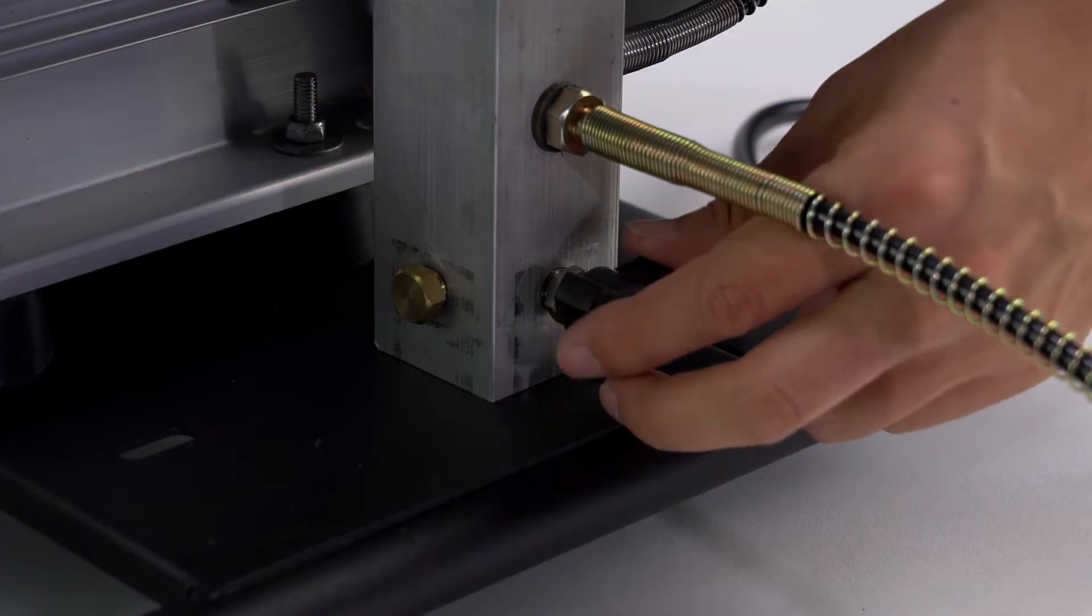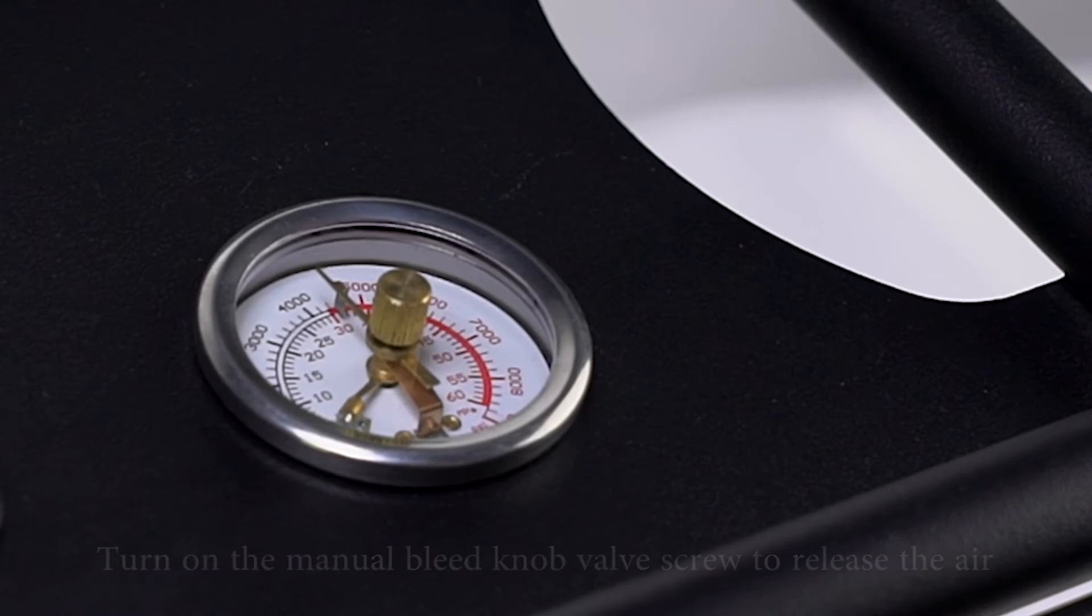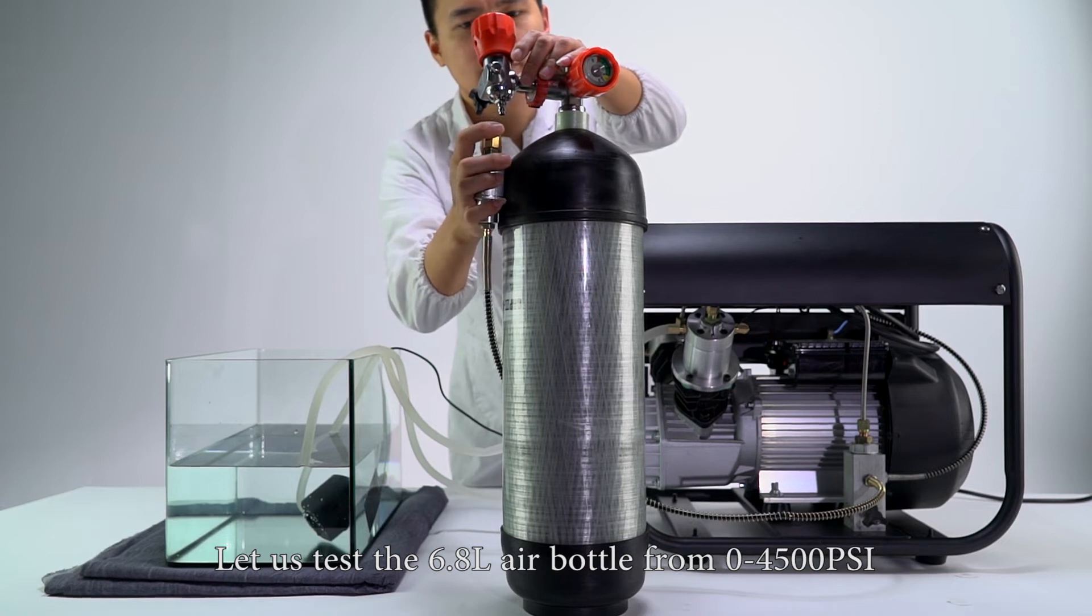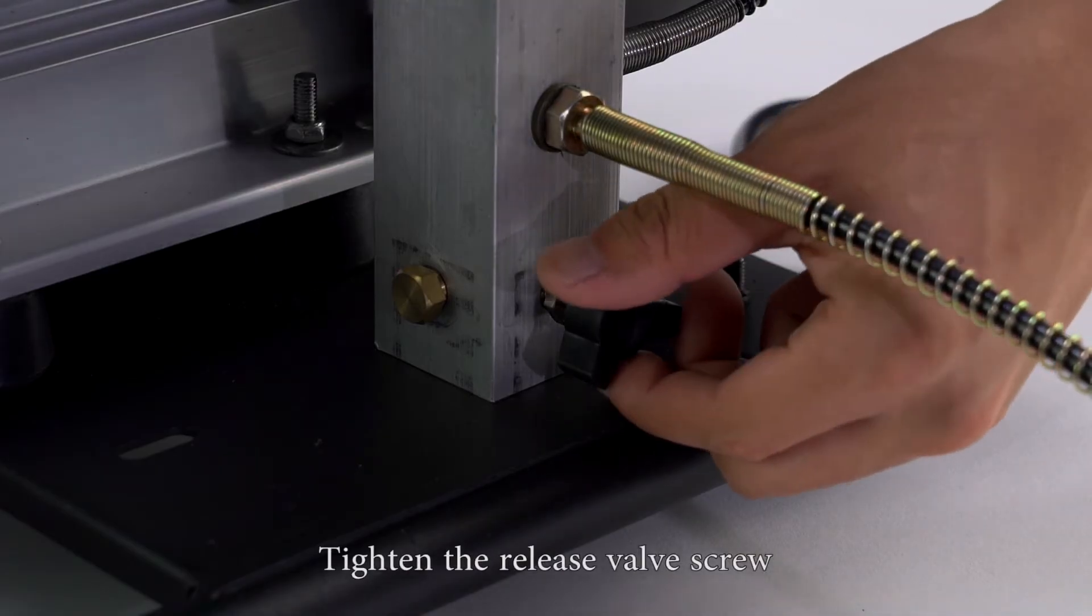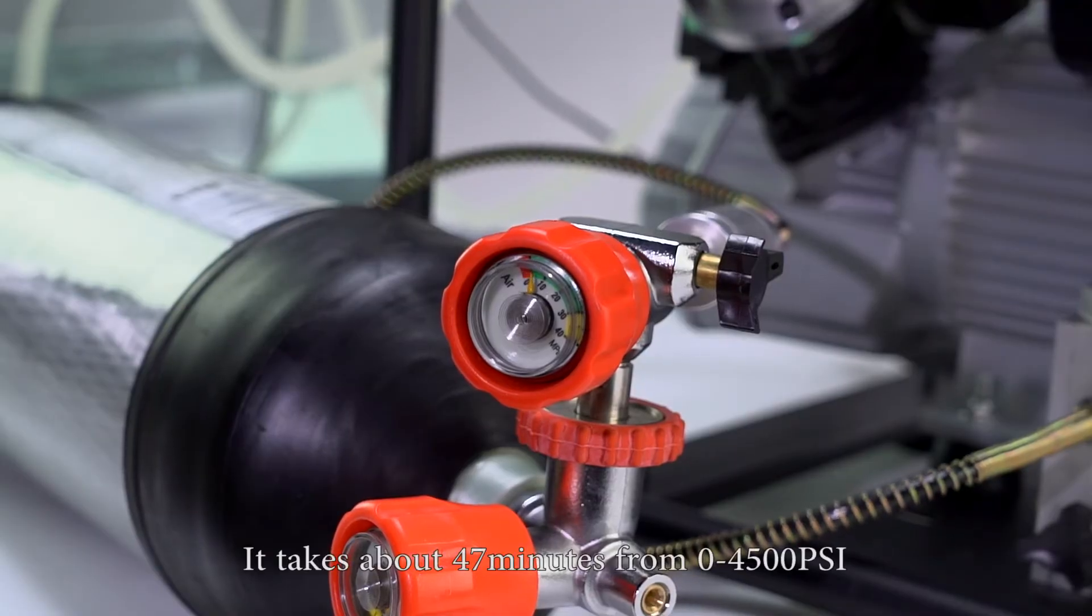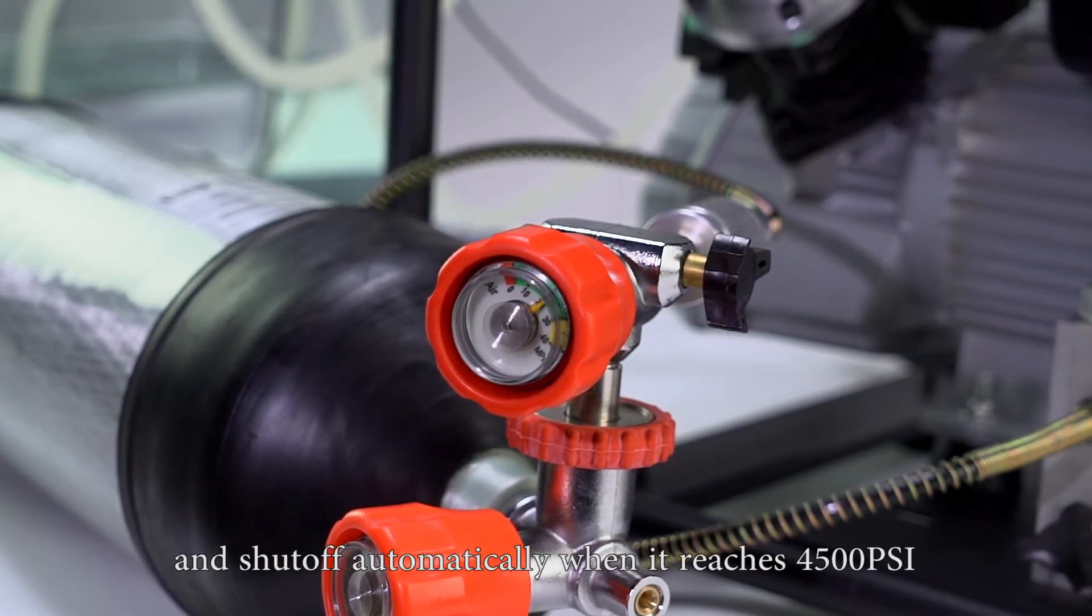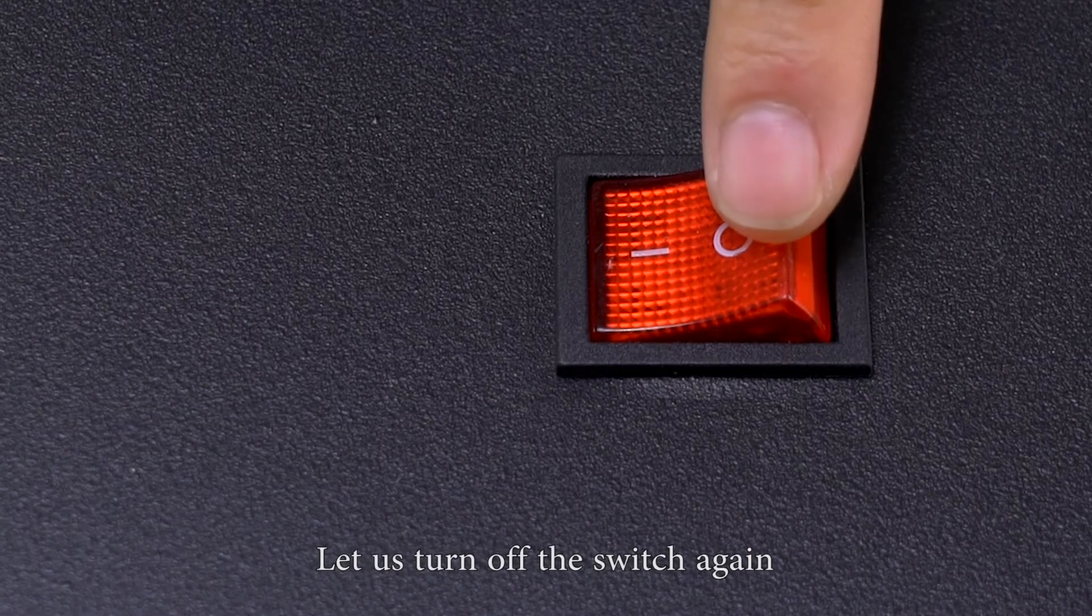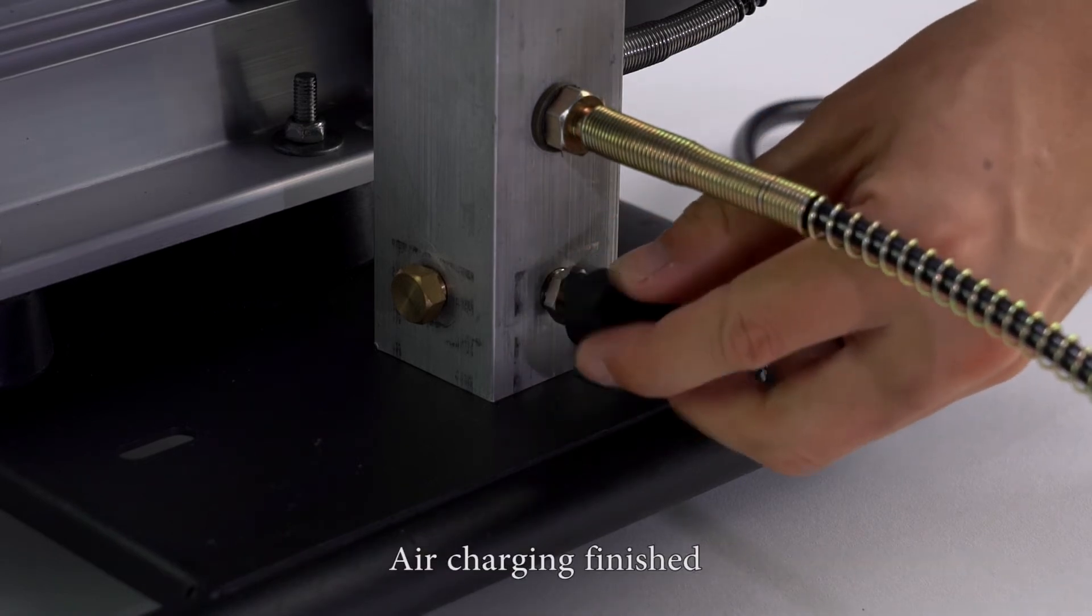Turn off the switch and turn on the manual bleed nut valve screw to release the air. Let's test the 6.8 liter air bottle from 0 to 4500 PSI. Connect the hose to the air bottle and tighten the release valve screw. After charging completes, turn on the manual bleed nut valve screw to release the air. Air charging finished.